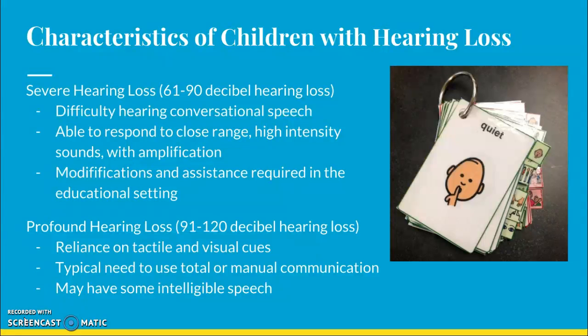Those modifications include things such as speech and language therapy and amplification. Then profound hearing loss, 91 to 120 decibels lost, is very much reliant on tactile and visual cues. They often need to use total or manual communication. Manual is going to be sign language along with some spoken language. Total communication incorporates lip reading, speech, and sign language together. There might be some intelligible speech at this level, but not always.